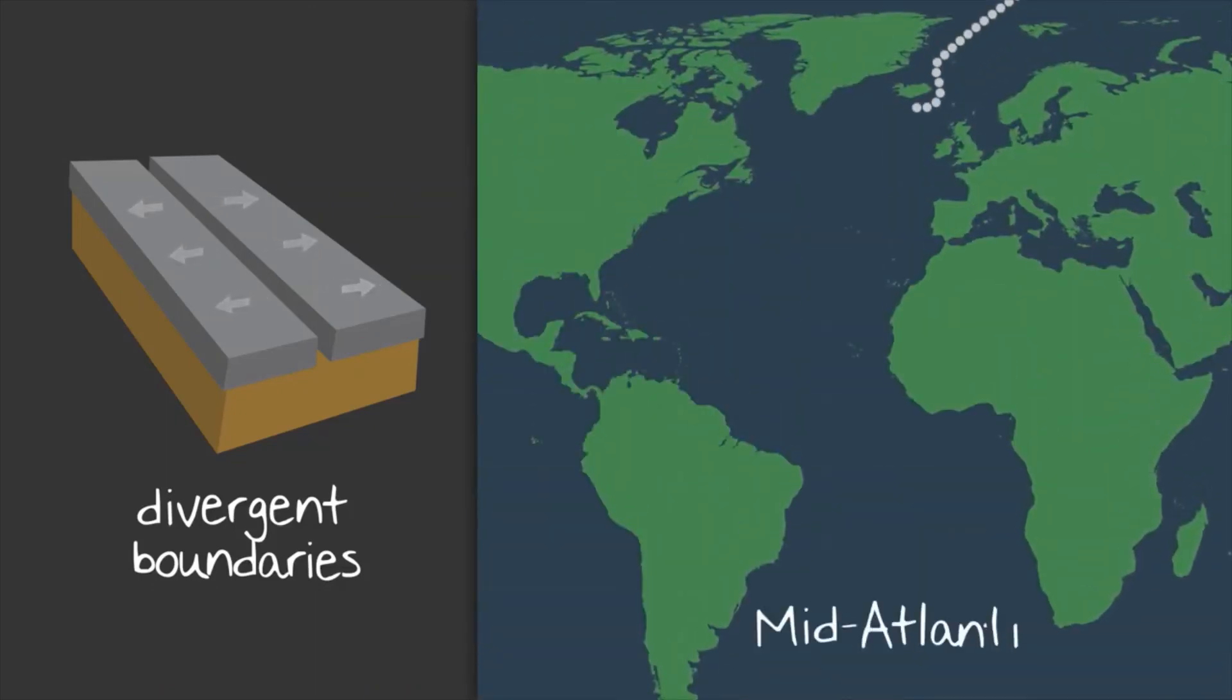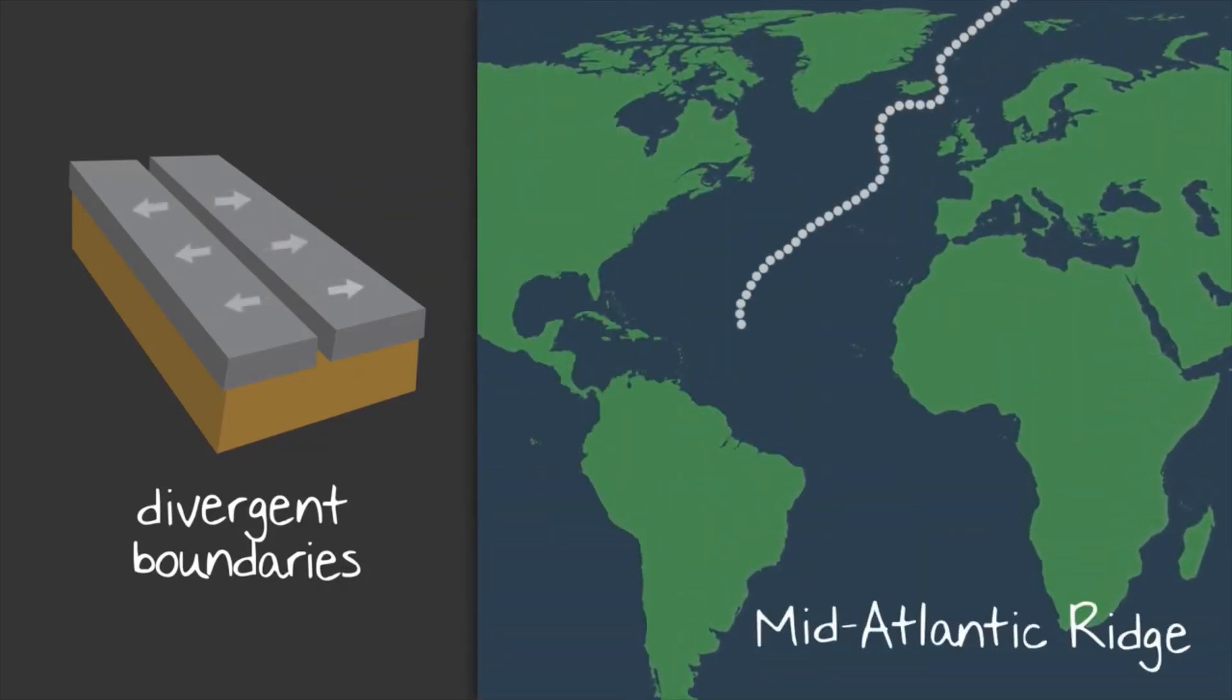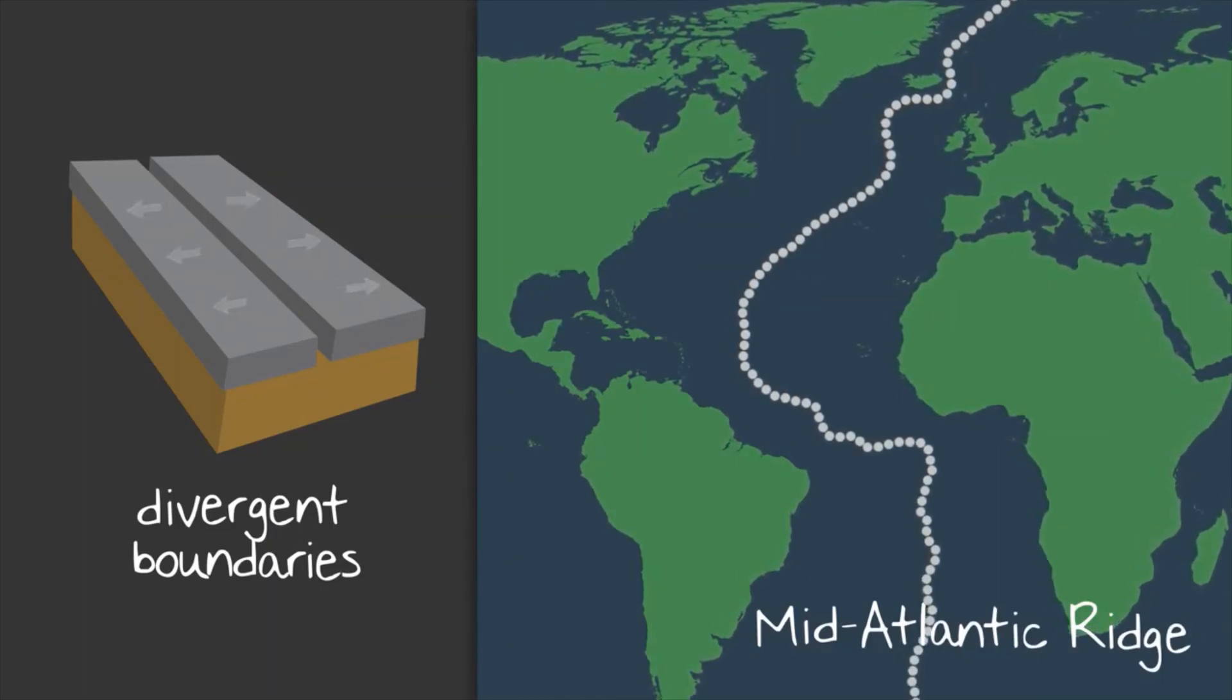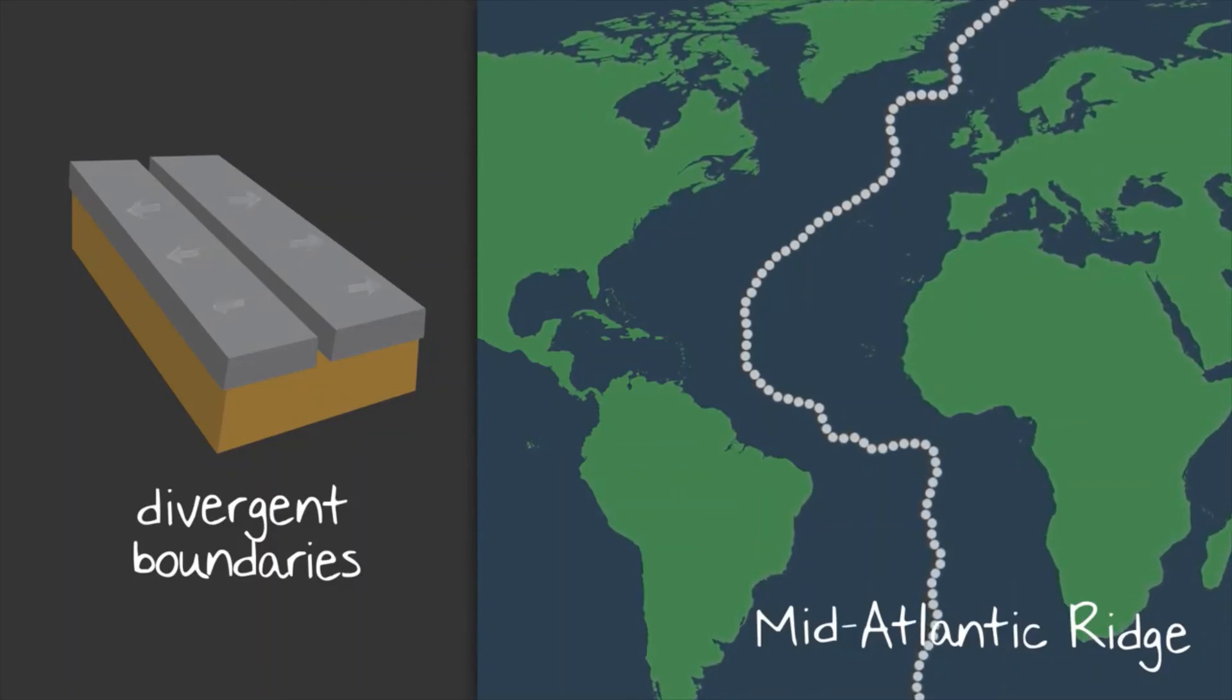The Mid-Atlantic Ridge is an example of where seafloor spreading has occurred. The crust under the ocean pulled apart, allowing magma to fill the space between, creating the tallest and longest mountain chain in the world.